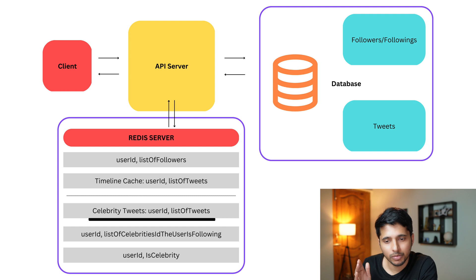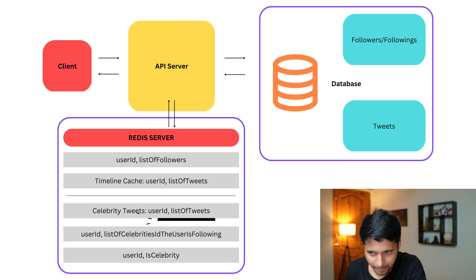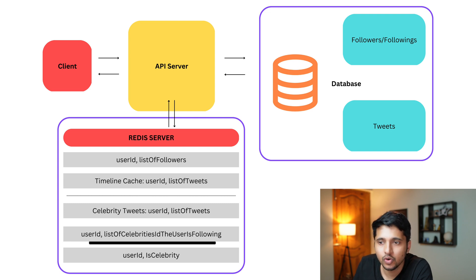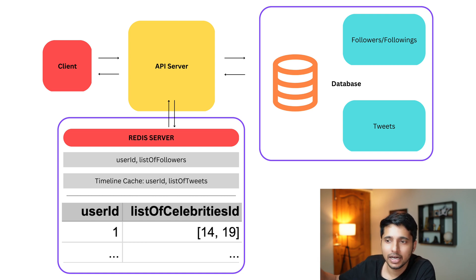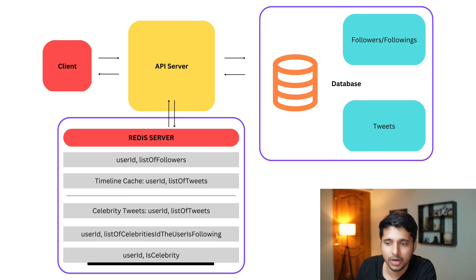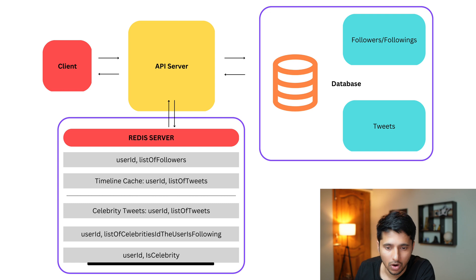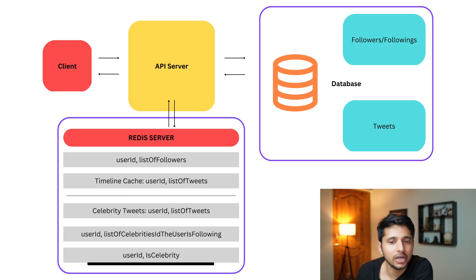The three new caches are: first, a celebrity tweet cache mapping a celebrity's user ID to the tweets created by that celebrity only. Second, a cache mapping a user ID to the list of celebrity IDs that user is following — for example, user 1 is following celebrities with IDs 14 and 19. Third, a boolean cache mapping a user ID to whether they are a celebrity, so we can determine which users are celebrities and which are not.